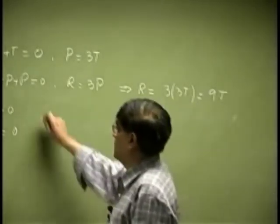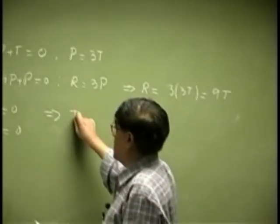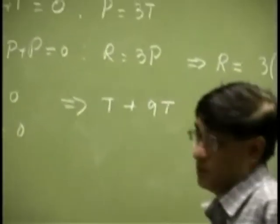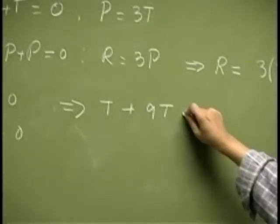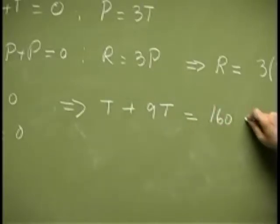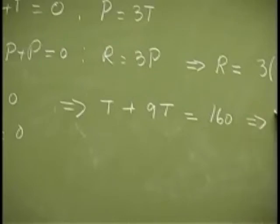Then we can come here. We still have T plus we have 9 times T as R, and then that should equal to 160.